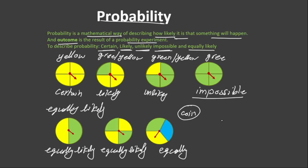In a dice, if we are going to roll it, the outcomes are equally likely, because the dice has got six faces. On each face, we have one number. So each number from one to six has got equal chance to happen.